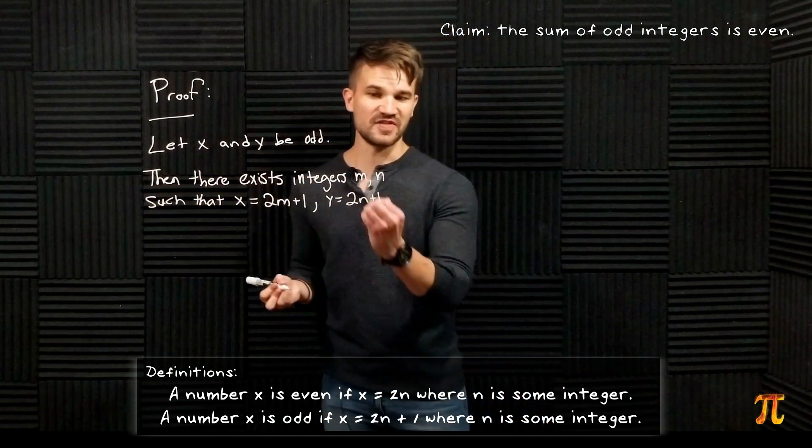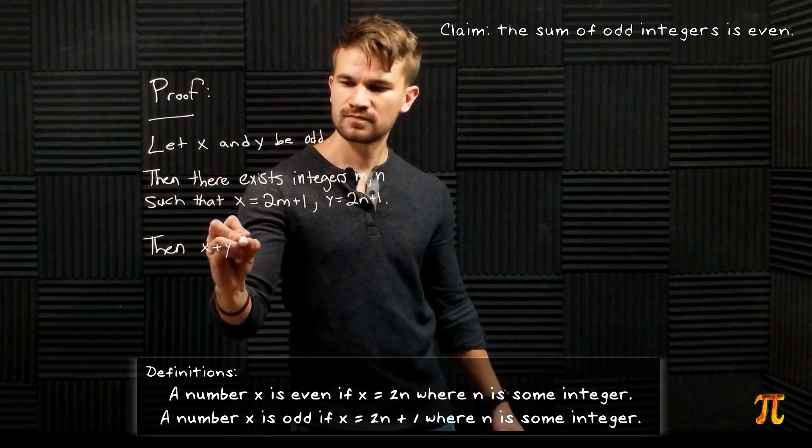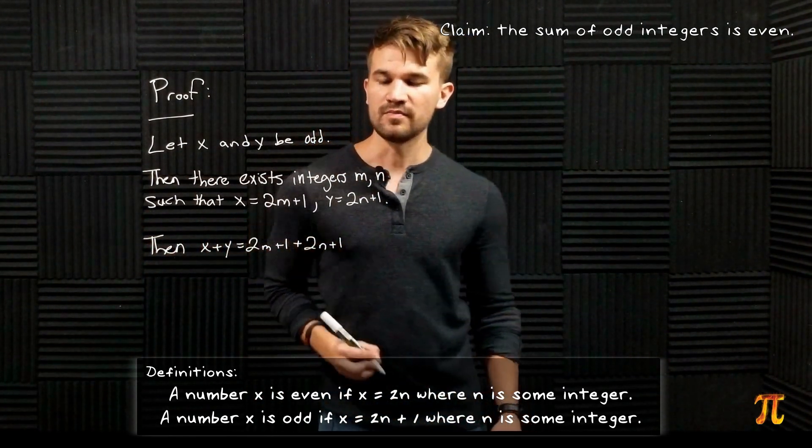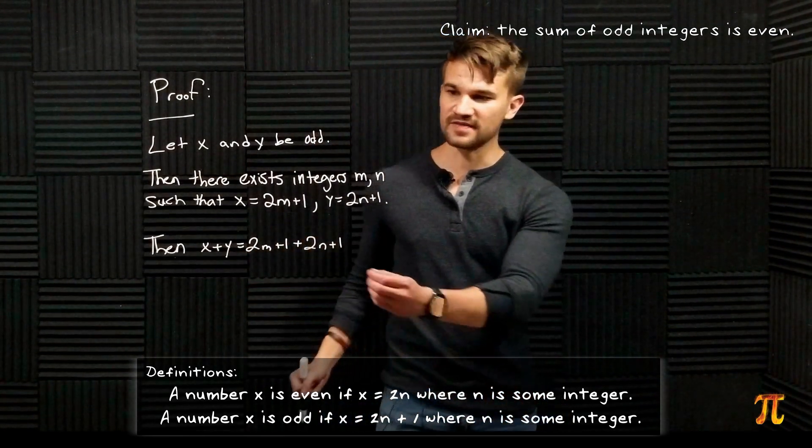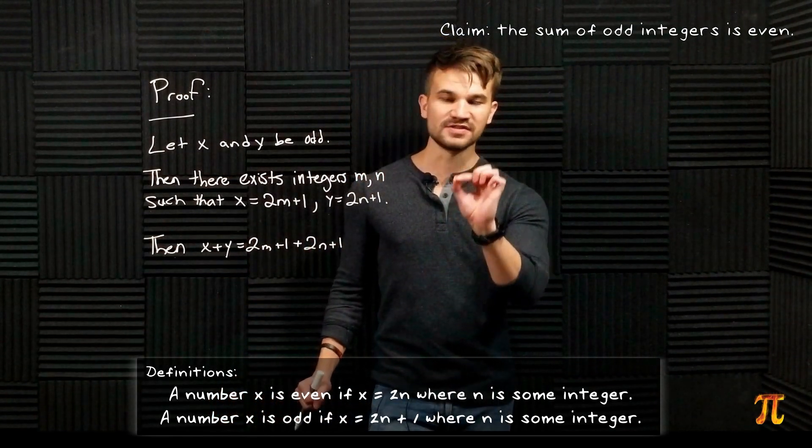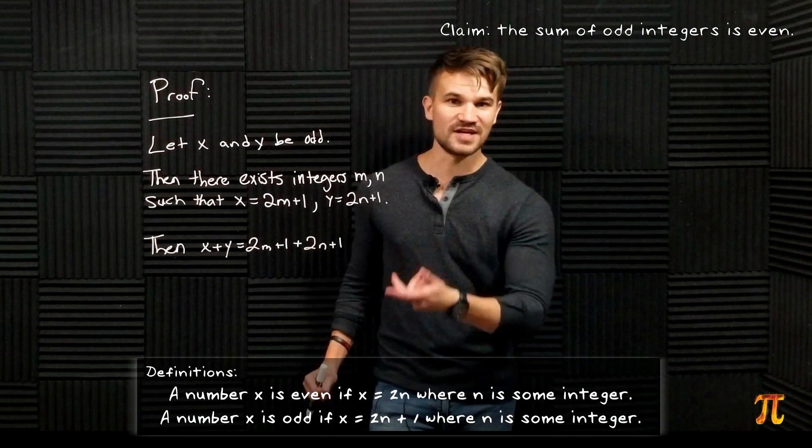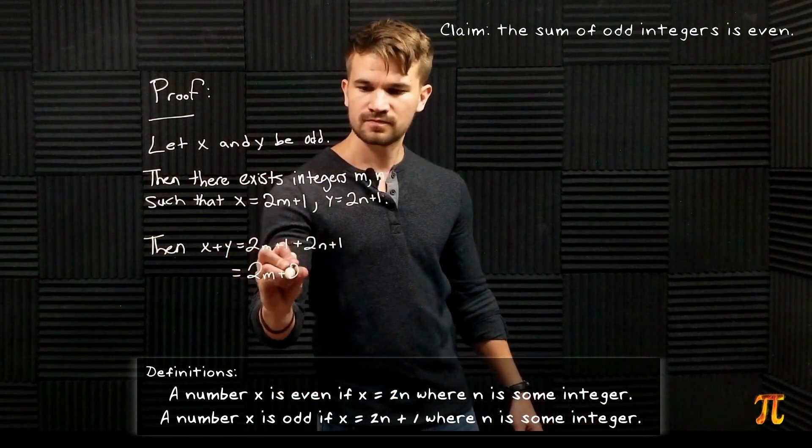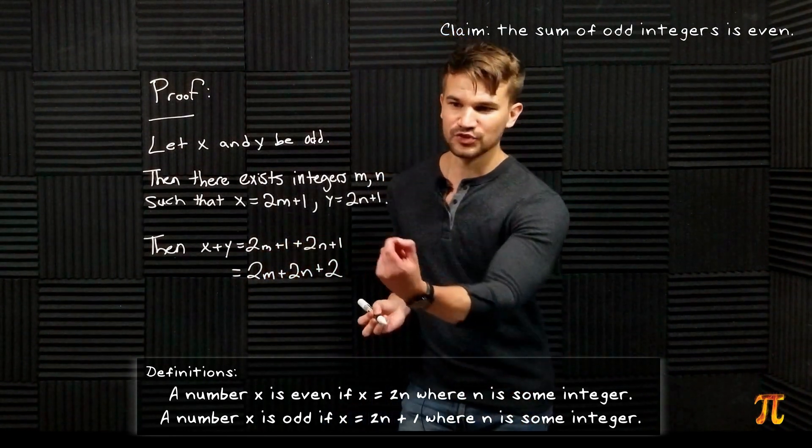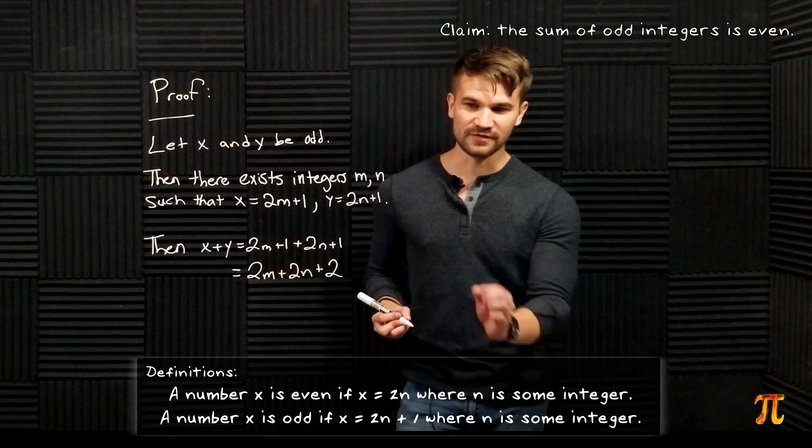Now we want to show something about their sum, so let's add x and y. By definition these are expressions for x and y, so I can write the sum x + y as 2m + 1 + 2n + 1. Now since addition is commutative, I can rearrange this however I want so that I get this. I can add the two ones together. Now finally by the distributive property I can factor out a 2.